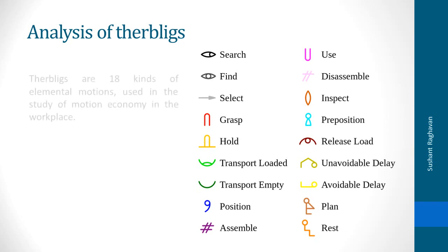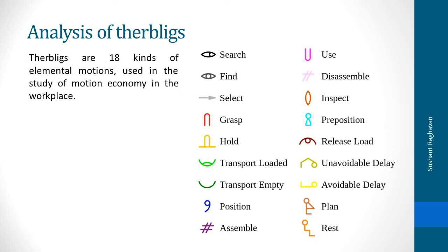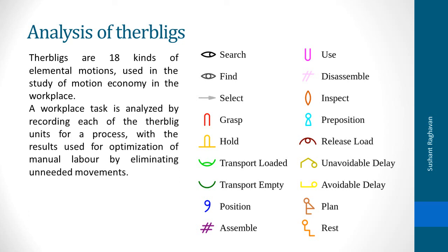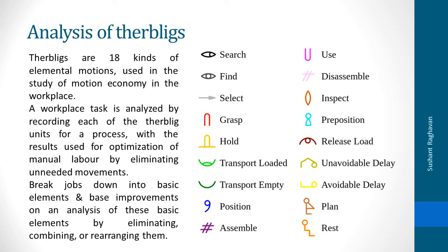Analysis of Therbligs. Therbligs are 18 kinds of elemental motions used in the study of motion economy in the workplace: search, find, select, grasp, hold, transport loaded, transport empty, position, assemble, use, disassemble, inspect, preposition, release load, unavoidable delay, avoidable delay, plan and rest. A workplace task is analyzed by recording each of the therblig units for a process, with the result used for optimization of manual labor by eliminating unneeded movements. Jobs are broken down into basic elements and improvements are based on an analysis of these basic elements by eliminating, combining or rearranging them.